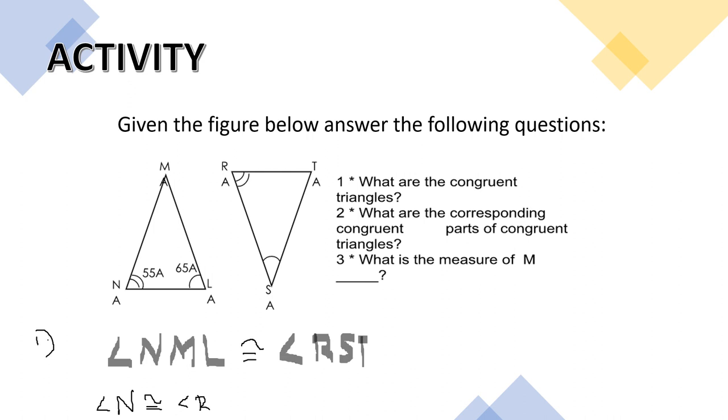What are the corresponding congruent parts of congruent triangles? So the parts. Let's go through them one by one. We have M here. This is M. It's our common vertex. In the other triangle, S is the common vertex. So therefore, these two are congruent.